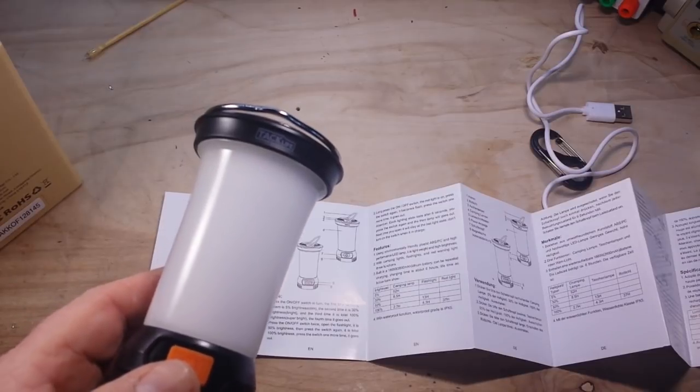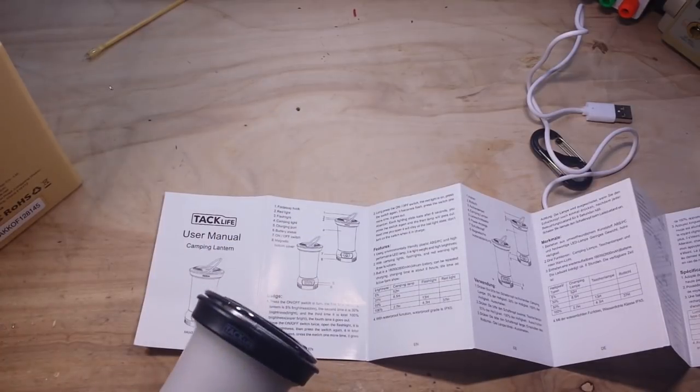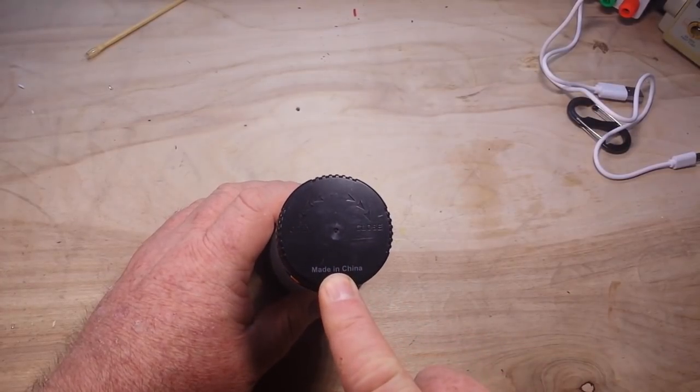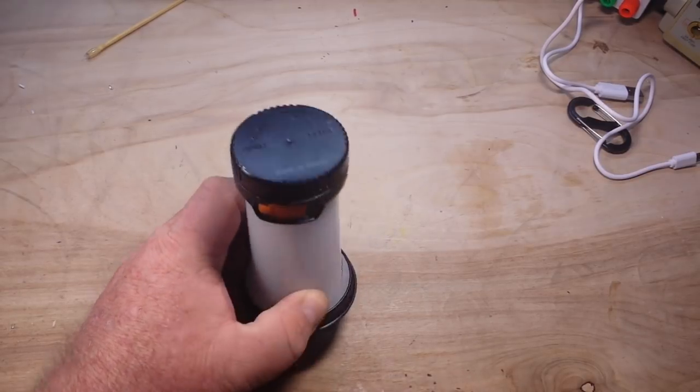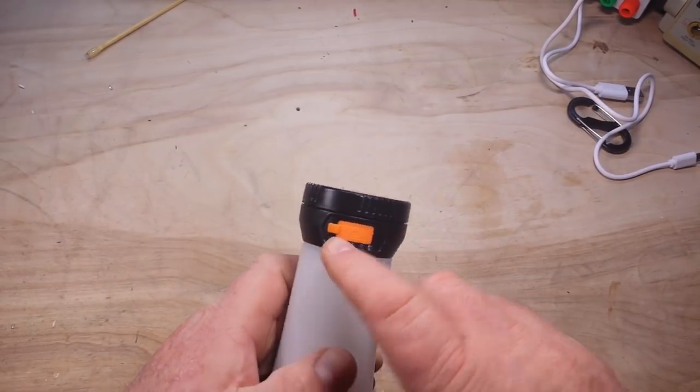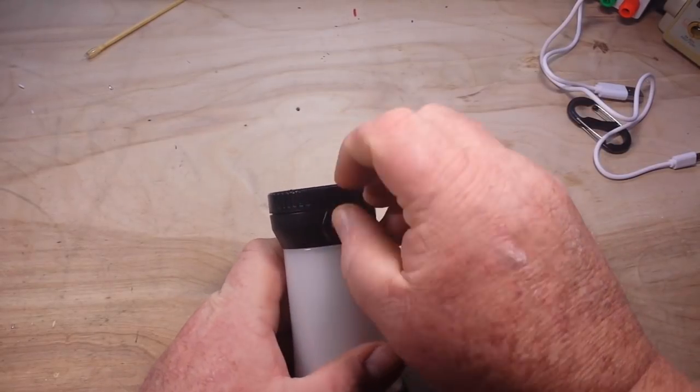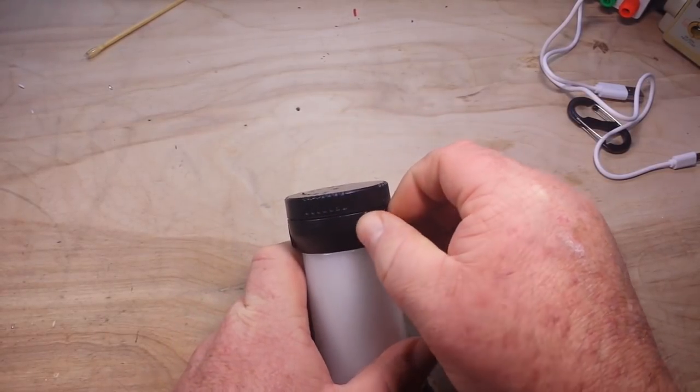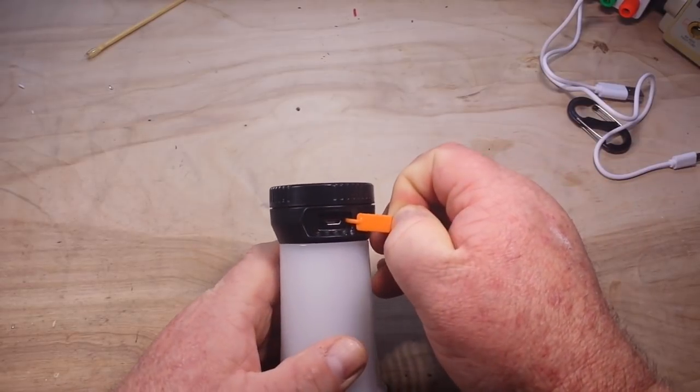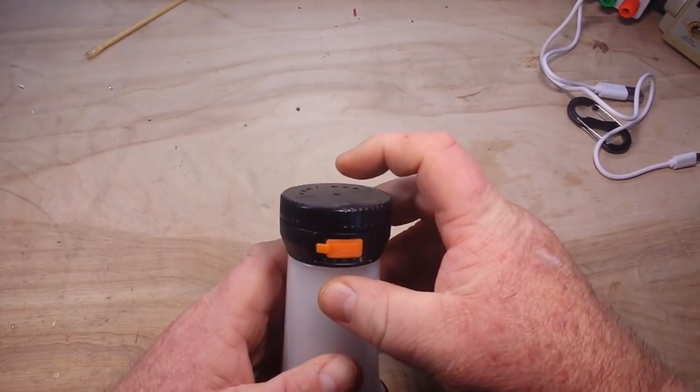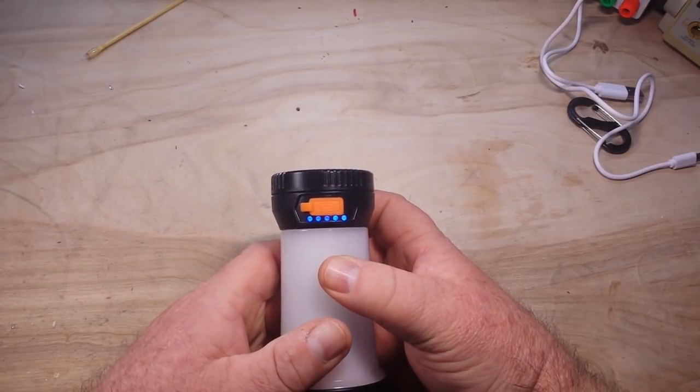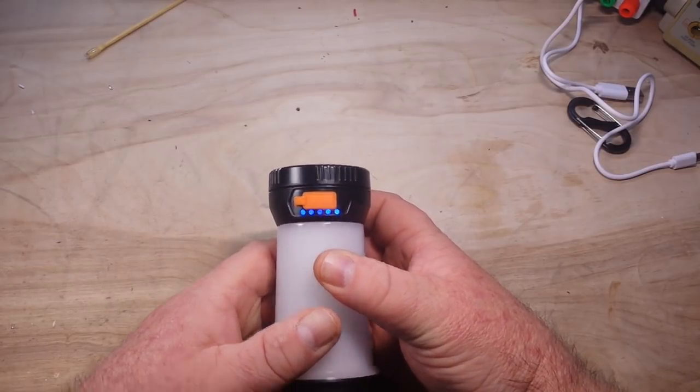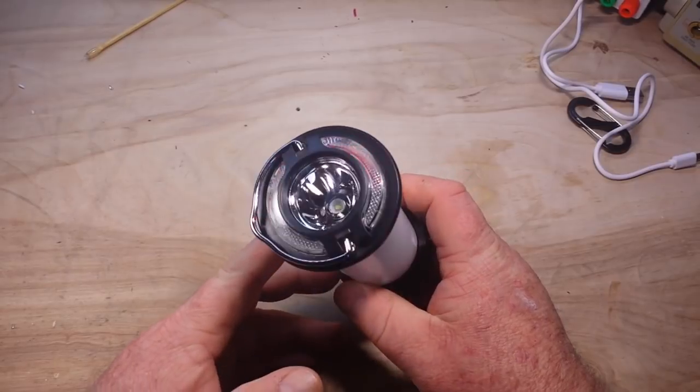Alright, so it's a flashlight in the lantern, big whoop right? Let's take it apart. Print it on top, made in China where they make everything including more Chinese. Here we have the charging port.